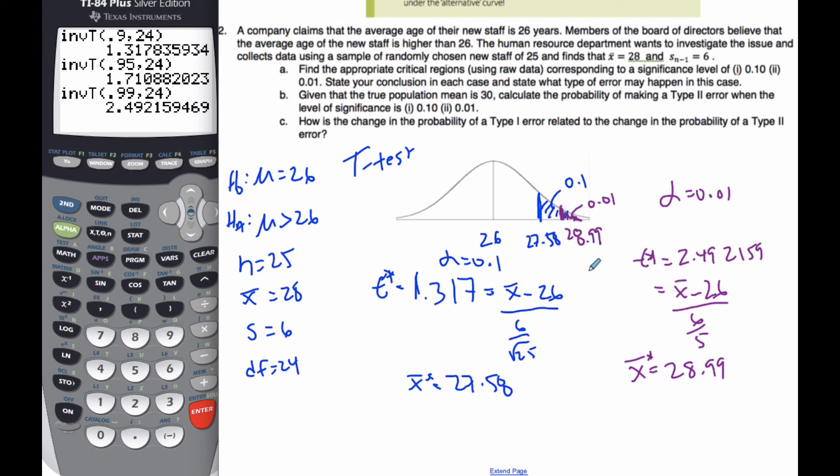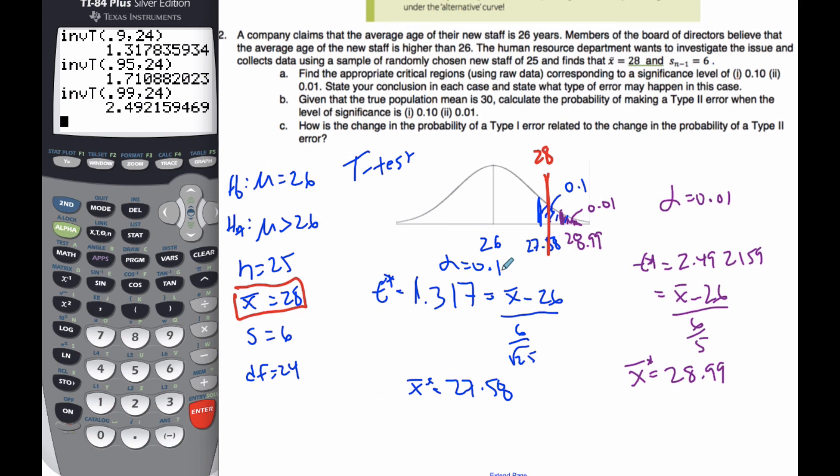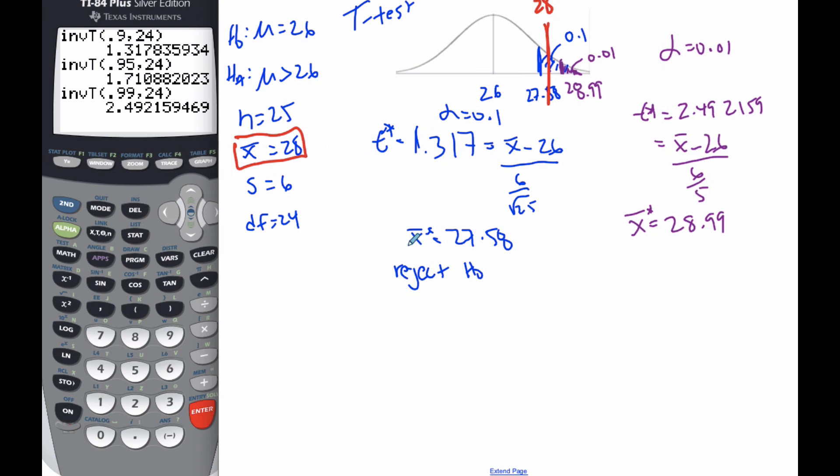Now stating the conclusion in each case and what type of error may have happened: my sample statistic x̄ = 28. If I'm doing the blue one where this is my alpha value, it is in the critical region, so I reject H₀ and claim the average age is over 26. If this occurred, it's possible that a Type 1 error may have occurred.